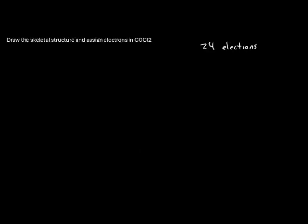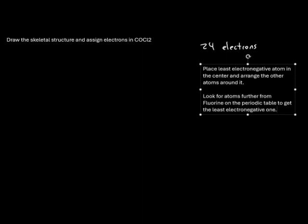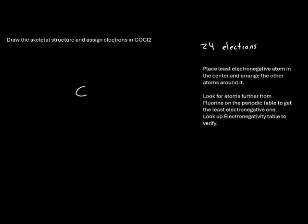Now that we know there are 24 electrons, we will draw the skeletal structure and assign the electron positions. We're going to put the least electronegative atom in the center and arrange the other atoms around it. In general, we're looking for atoms that are further away from fluorine's position on the periodic table — you can always look up an electronegativity table to verify. Carbon is furthest to the left and furthest from fluorine, so we'll place carbon in the center with an oxygen and two chlorines around it.